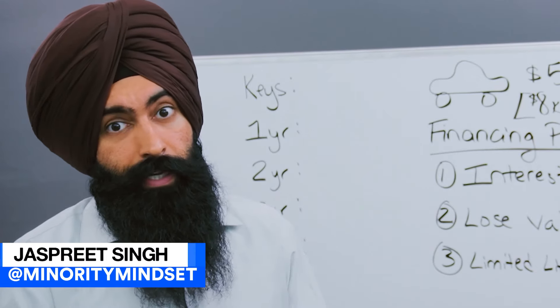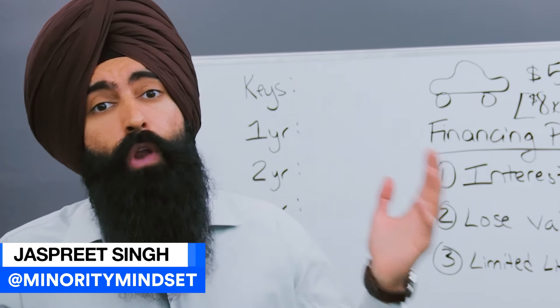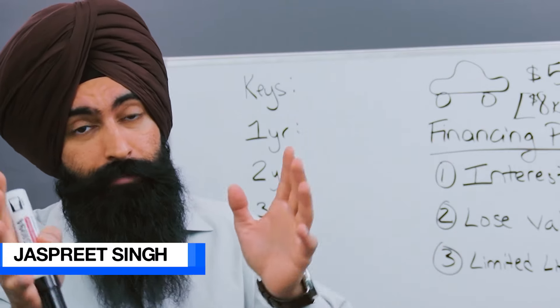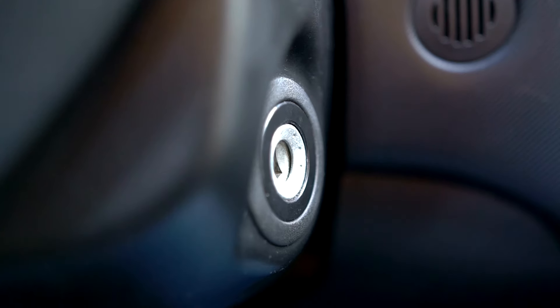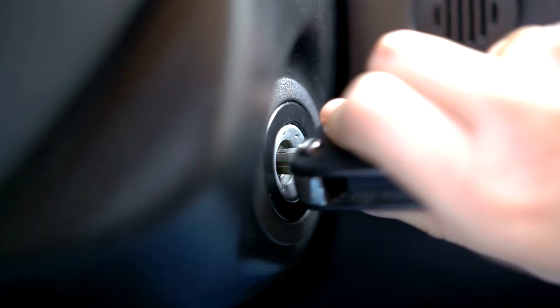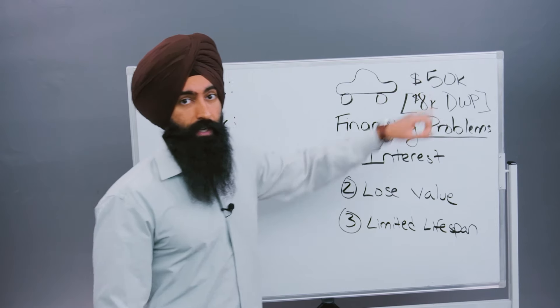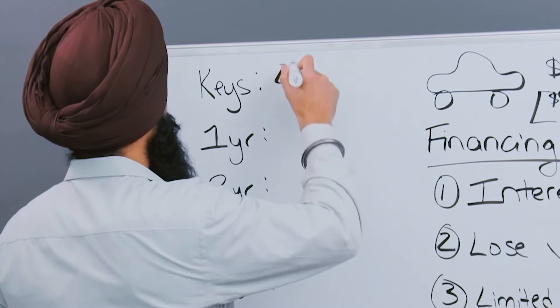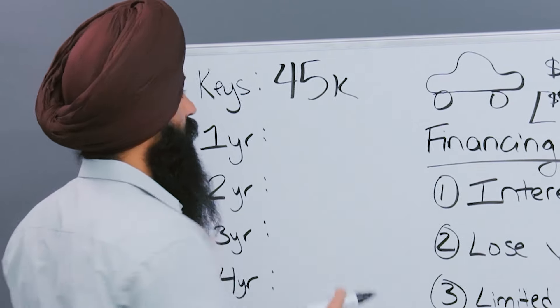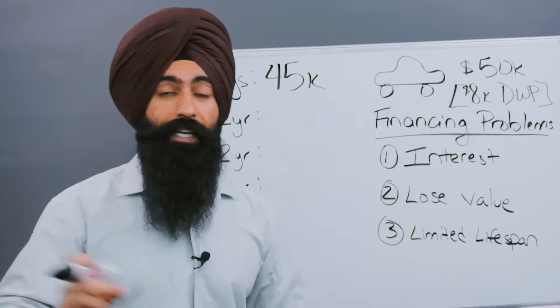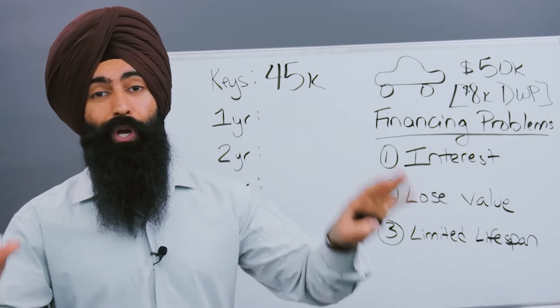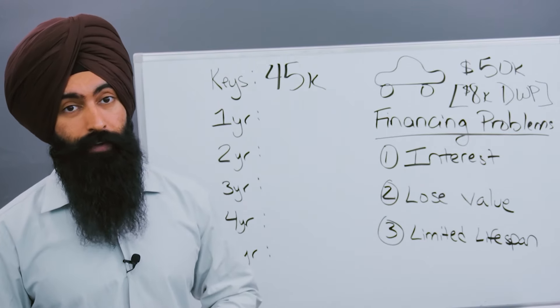The problem with something like your car versus something like a piece of real estate is that this car is going to lose value, especially if you're buying this car new. So as soon as you go to the lot and you put your keys in the ignition, that car is immediately going to lose value from $50,000. It's going to drop down to around $45,000 the minute you put the keys in the ignition and you sign the paperwork. You bought the car and you immediately lose $5,000 worth of value.